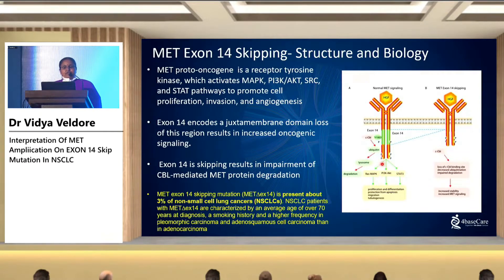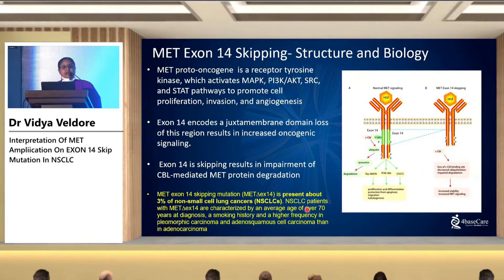Now that we understand the biology, we can address the targets. The kinase domain — since this phosphorylation remains constitutively on — can be targeted with drugs, making it a potential therapeutic target. Patients over the age of 70 with a smoking history, and some histological correlation in terms of pleomorphic carcinoma or adenosquamous, are often candidates who could carry MET exon 14 skipping mutations.